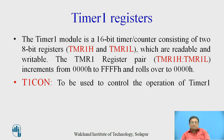The special function registers associated with Timer 1: the Timer 1 module is a 16-bit timer/counter which consists of two 8-bit registers, TMR1H and TMR1L, meaning Timer 1 higher byte and Timer 1 lower byte. These two registers are readable and writable, and the TMR1 register increments from its initial count — which may be 0000 or a required count — up to FFFF, then rolls over to 0000H and a timer interrupt occurs.